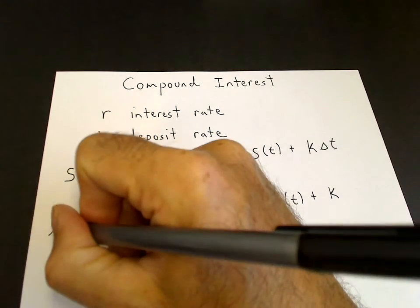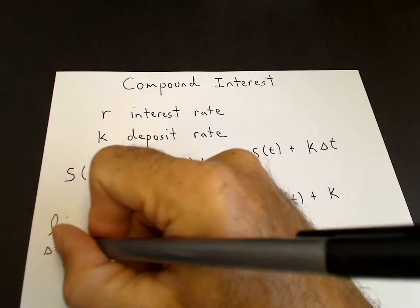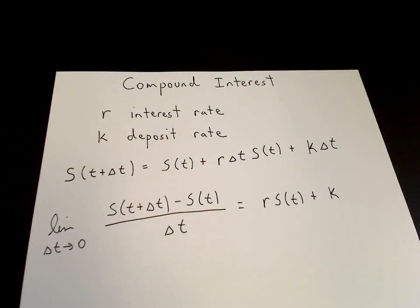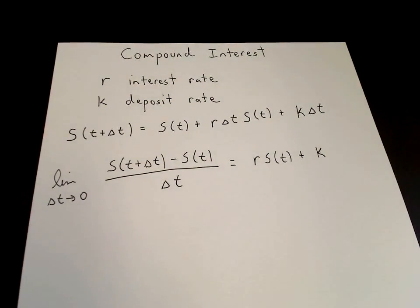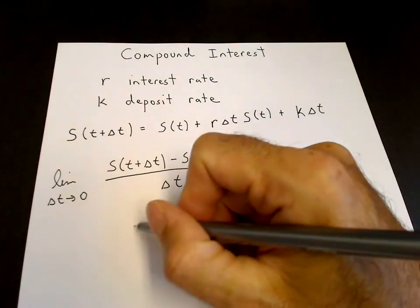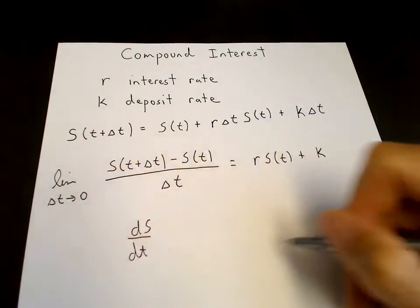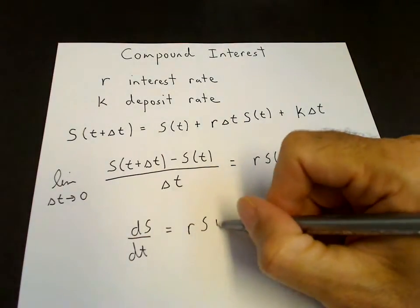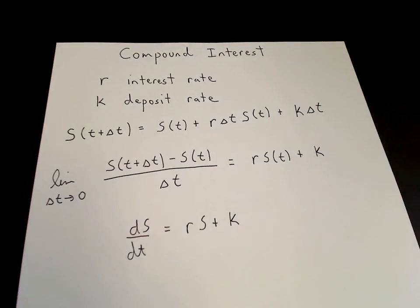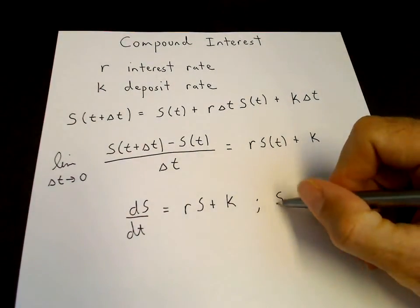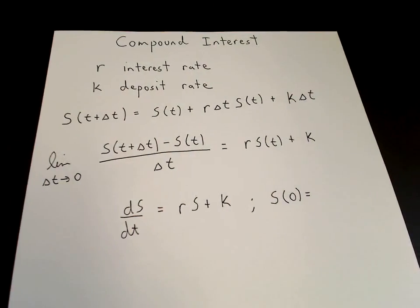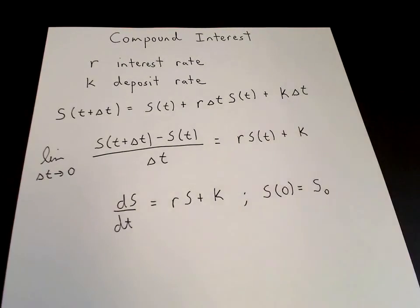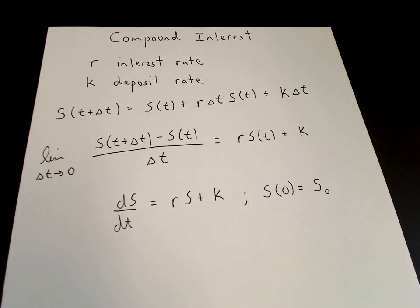Instead of being awarded a return once a year, once a month, or once a day, we take the limit as delta t goes to 0 so that compounding becomes continuous. We obtain the differential equation dS/dt = rS + k. This requires an initial condition: the amount of money initially placed into the account, which we call S-naught.